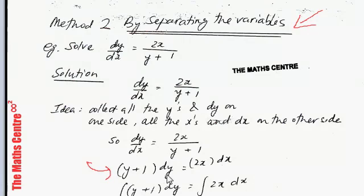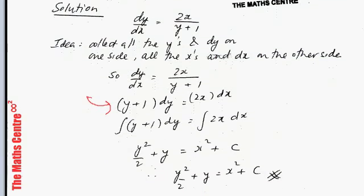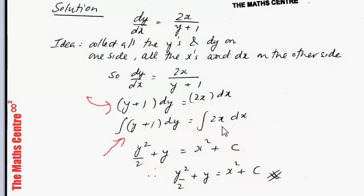When you see dy on the left and dx on the right, introduce the symbols of integration. Integrating the left side: ∫(y + 1) dy = y²/2 + y. Integrating the right side: ∫x dx = x²/2. Including the constant of integration, the general solution is y²/2 + y = x² + c, and we are done.